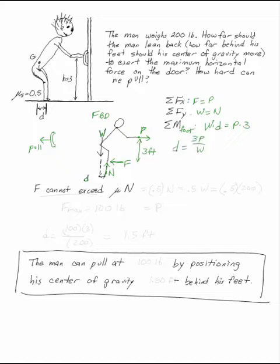We don't actually know any of them until we consider that he needs to not slide toward the door. F cannot exceed mu times N. So the maximum F is 0.5, that's our static coefficient times N, or 0.5 times 200 pounds. So the maximum friction force I can have is 100 pounds.